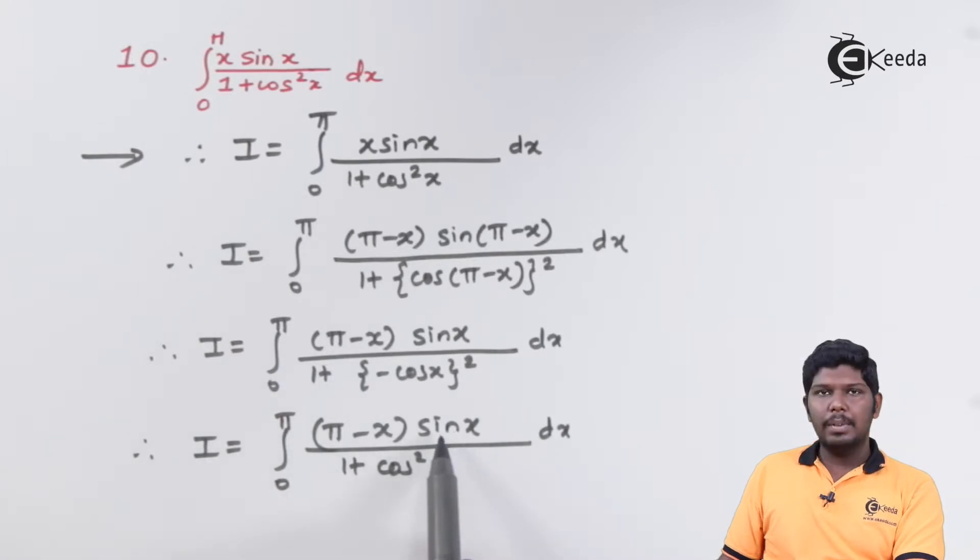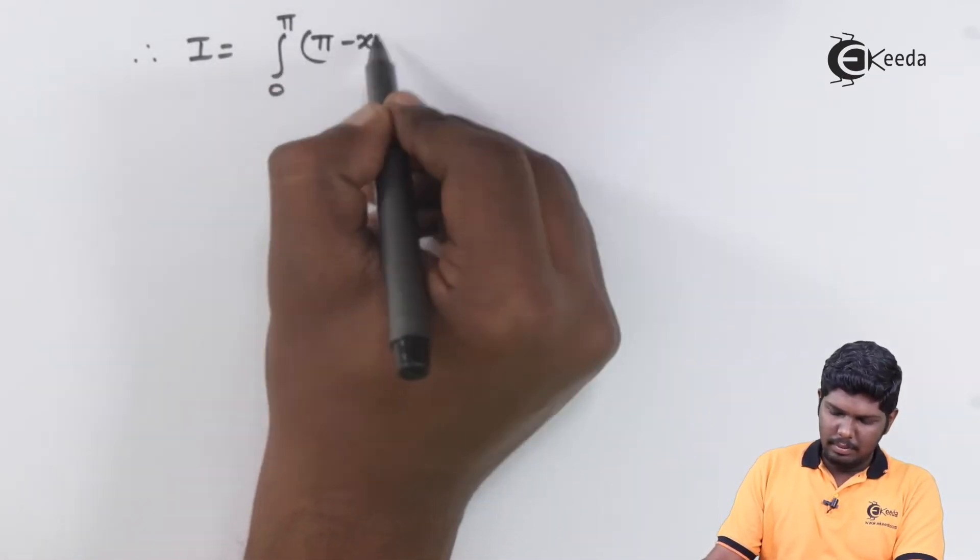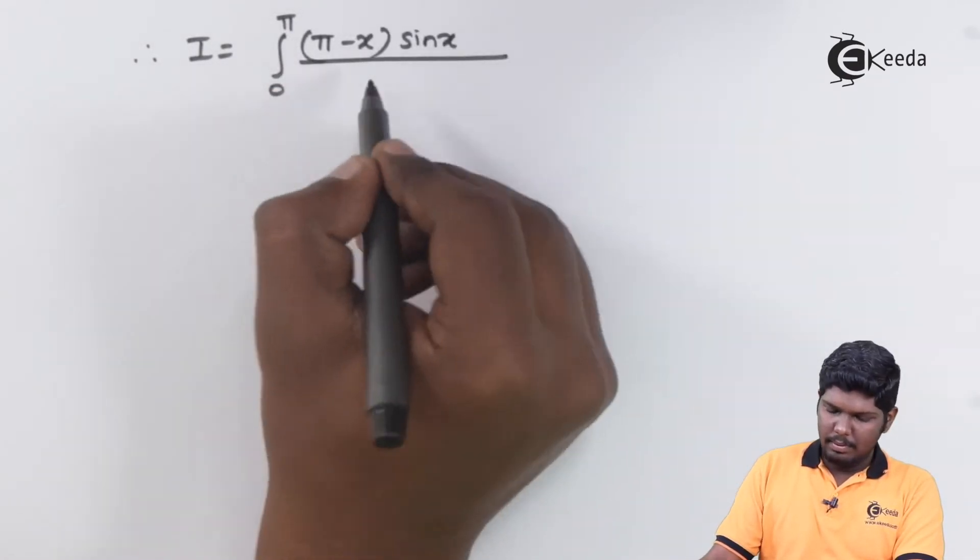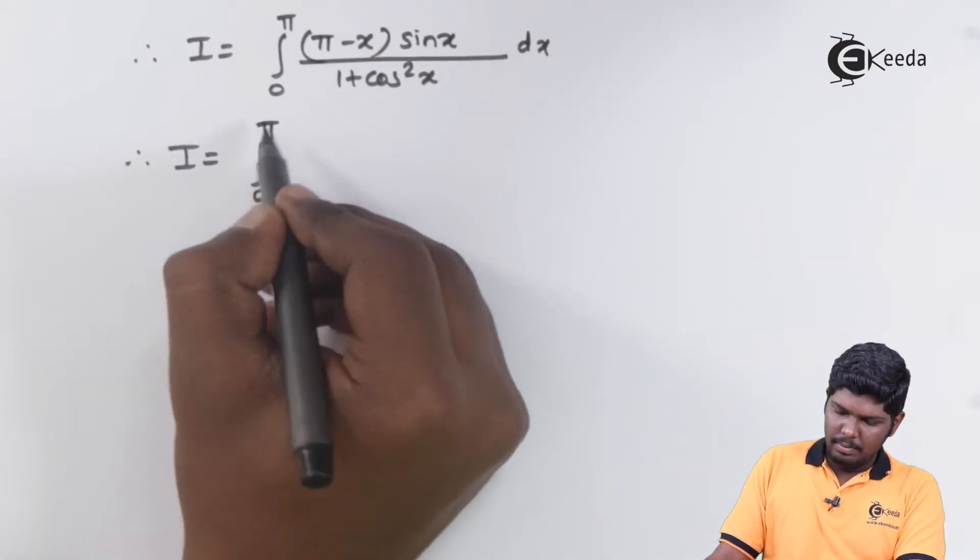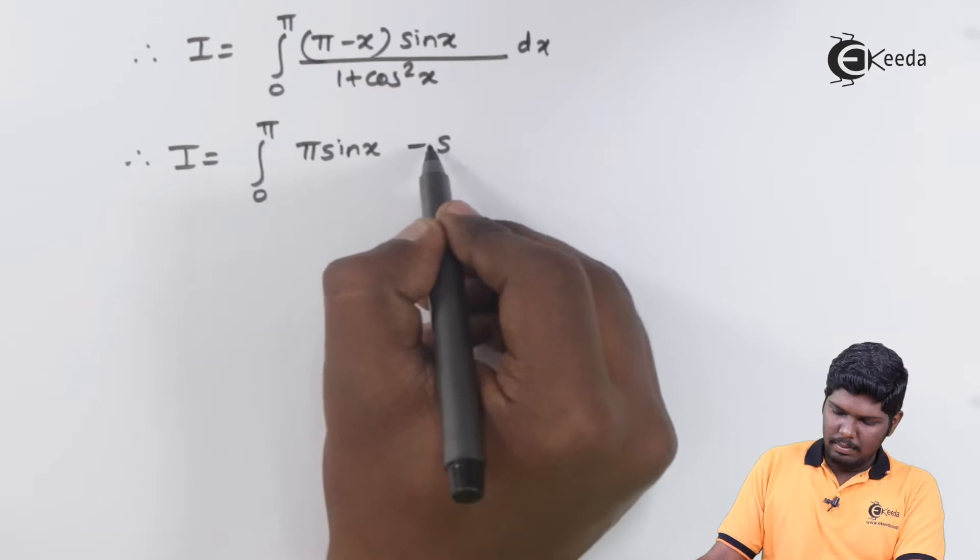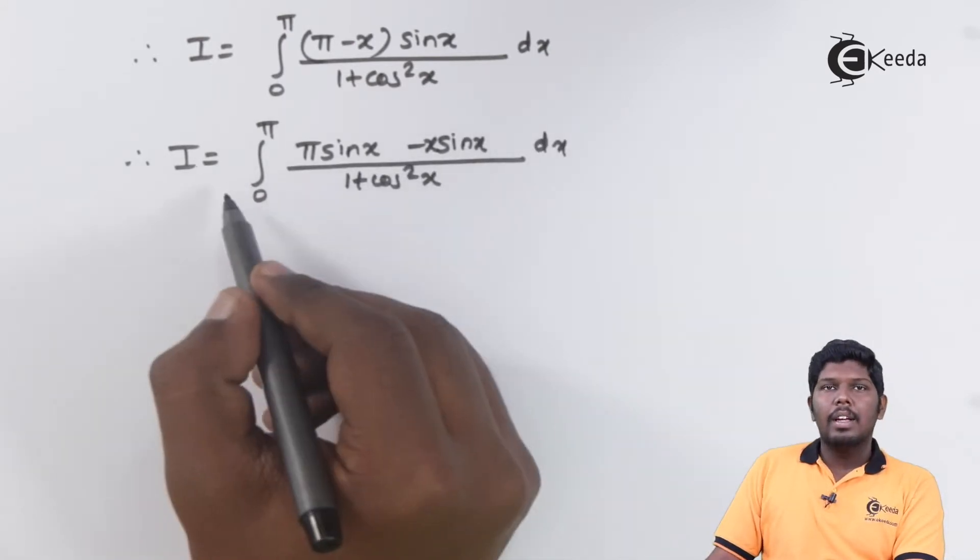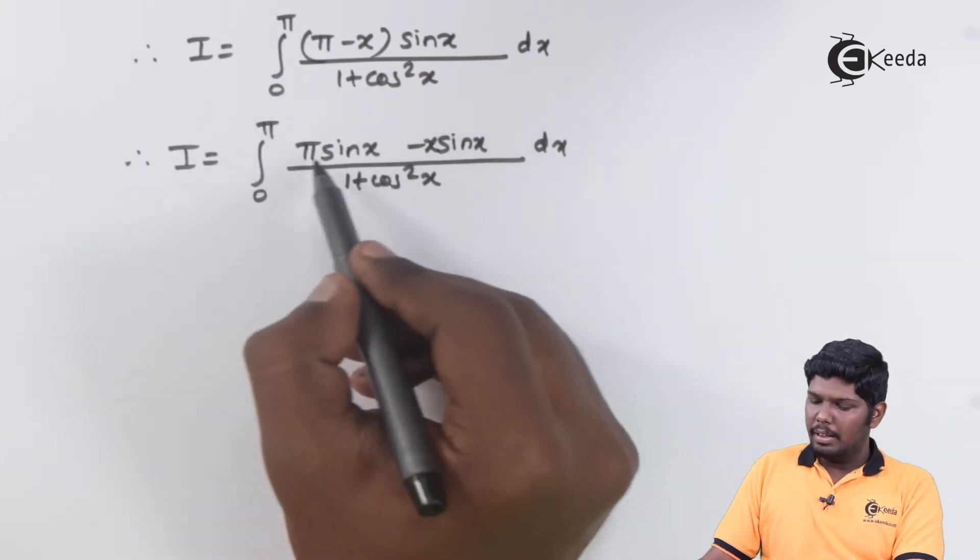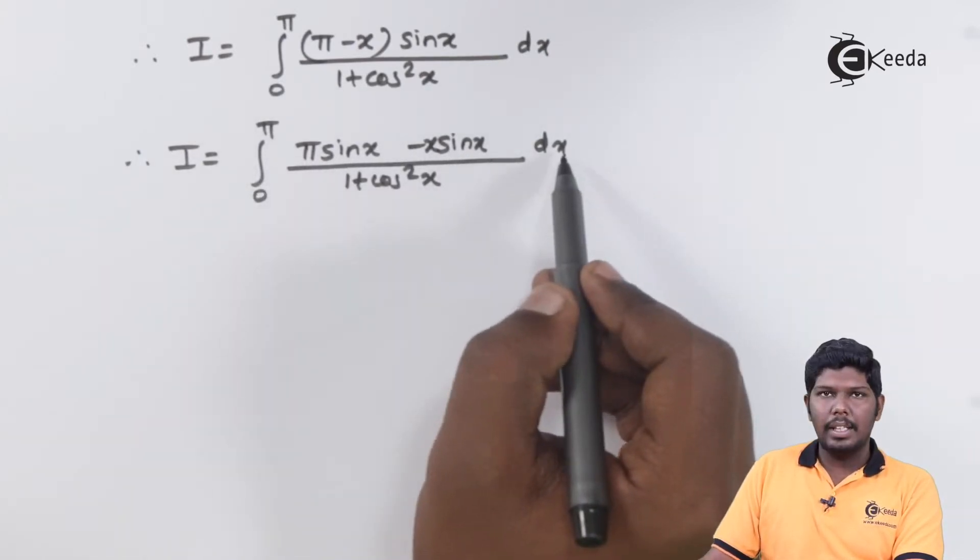Let us multiply this term sin x to both the terms that is pi and x. This will give you integral 0 to pi, pi sin x minus x sin x upon 1 plus cos square x dx.